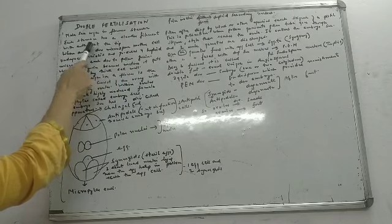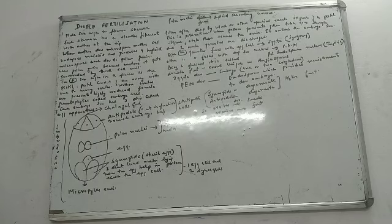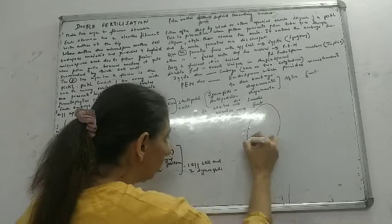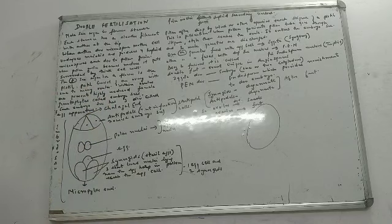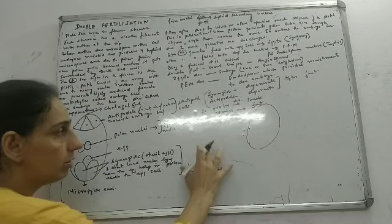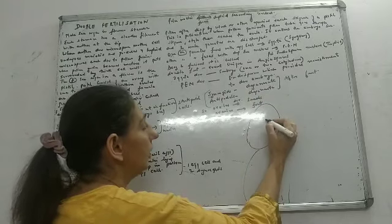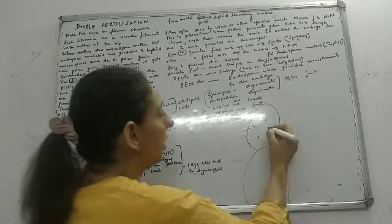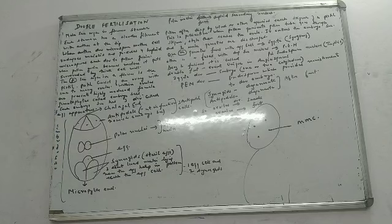These microspore mother cells will undergo meiosis and they will produce four haploid microspores. So the anther contains special cells called MMCs — microspore mother cells — and each microspore mother cell will undergo meiosis division to produce four microspores.